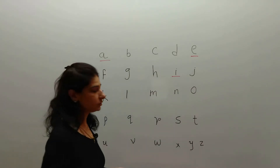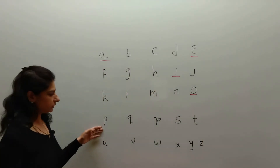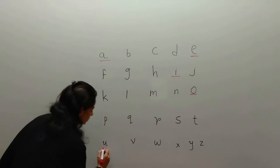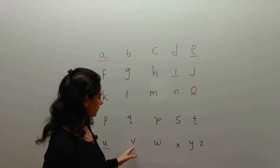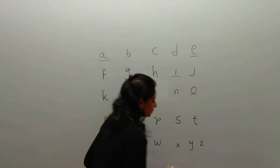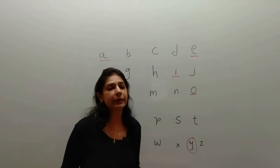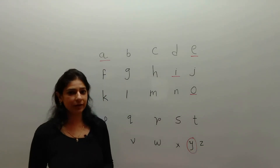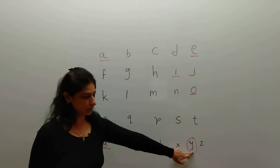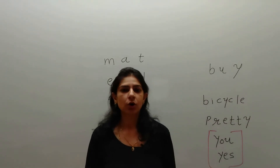L, M, and N are also consonants. O is another vowel. P, Q, R, S, T — these are all consonants. U is the last vowel. V is a consonant. W is a consonant. X is a consonant. Y is a special vowel — we'll talk about that later. And Z is a consonant. So in the English alphabet there are 26 letters, five main vowels, and one special vowel: Y.